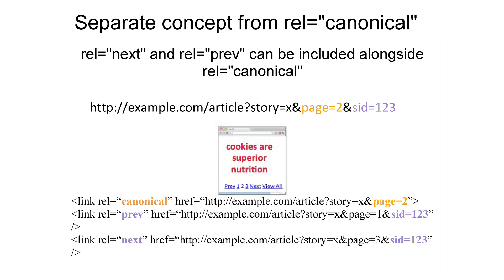Something to note is that rel canonical can actually be used alongside rel next/prev. Let's take page two again — this time it has a session ID. This URL can actually list both the canonical version without a session ID, as well as a rel prev and rel next with the same parameters including the session ID.